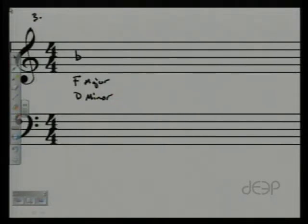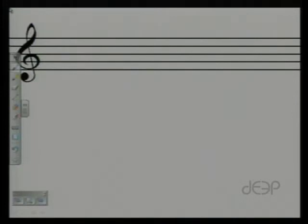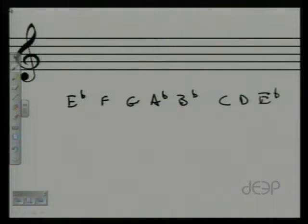For part two, it gives you the major scale and then it asks you to write the minor scale. So for number one: E flat, F, G, A flat, B flat, C, D, E flat. Now, this is our major and the relative minor begins on the sixth note. One, two, three, four, five, six.